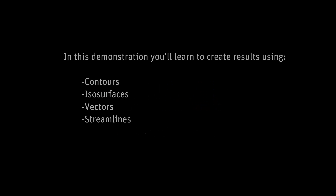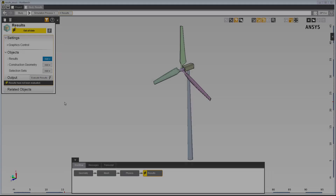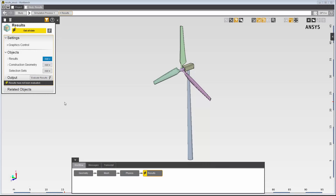In this demonstration, you'll learn to create results objects in ANSYS AIM. You can create contours, isosurfaces, vectors, and streamlines to process numerical and graphical visualizations of your simulation physics. I'll use a wind turbine geometry to create results objects to visualize the interaction between the air and the wind turbine.